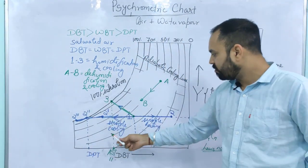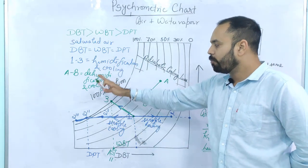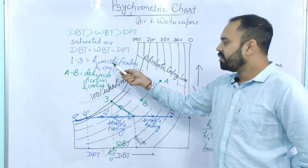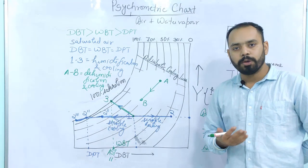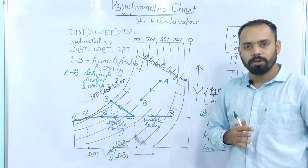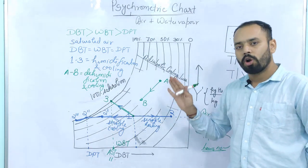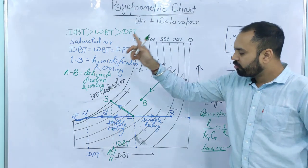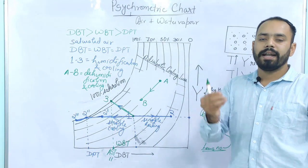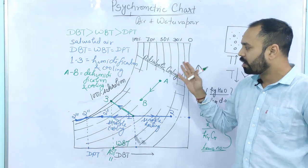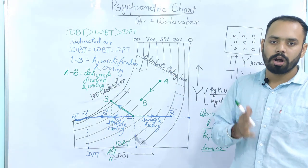If you know how to locate these three temperatures and how to draw lines representing different processes — sensible heating, sensible cooling, humidification with cooling, dehumidification with cooling, humidification with heating, and dehumidification with heating — you can answer all the theoretical questions on humidification and dehumidification. For solving numerical problems, you will not use the psychrometric chart in the GATE examination, but this graphical knowledge is required for theoretical and chart-based questions. Thank you very much — I hope this is going to help you a lot in your upcoming exam.